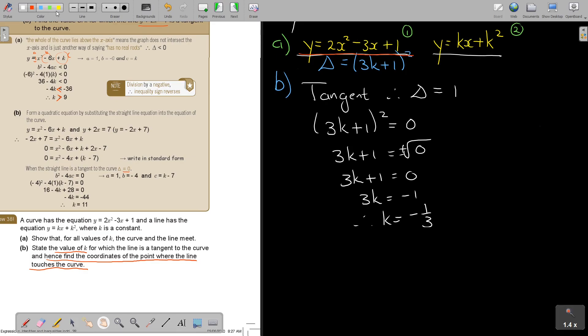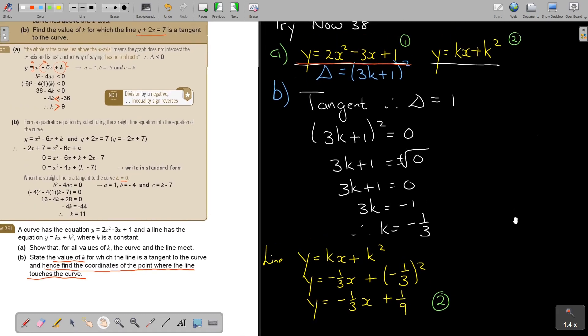Then I must solve this two simultaneously to find that point of intersection between the line and the curve. Let's start by substituting. So, I have that Y. This is my line. Y is equal to KX plus K squared. So, Y is equal to negative 1 third X plus negative 1 third squared. So, Y is negative 1 third X plus 1 over 9.